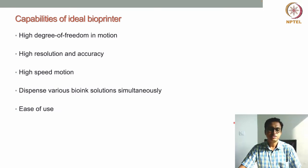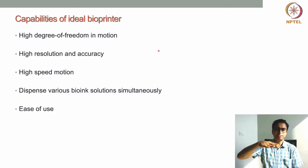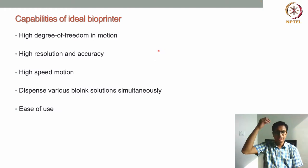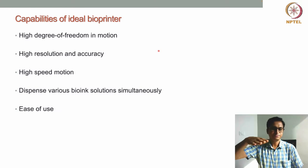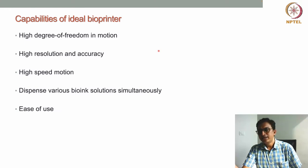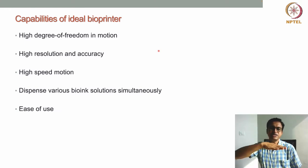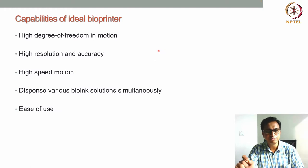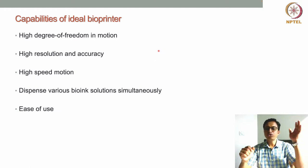The first capability is a high degree of freedom in motion. Till now we have seen that the bioprinting head can move in X, Y, Z directions. In case of inkjet-based bioprinters, the print head can move; in case of laser-assisted bioprinting, the laser is moving on the surface. But the print head should have a very high degree of freedom in motion.